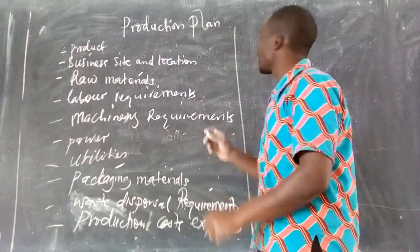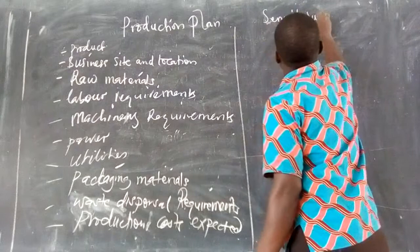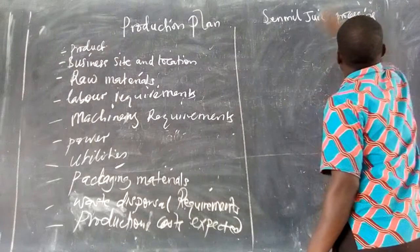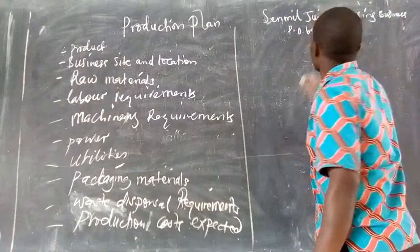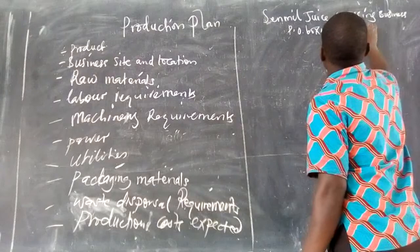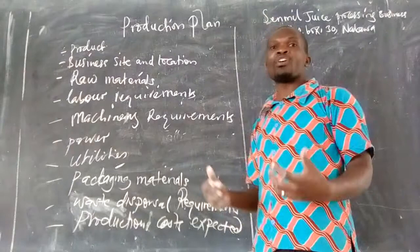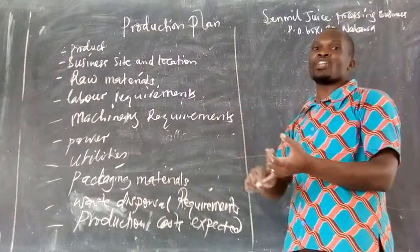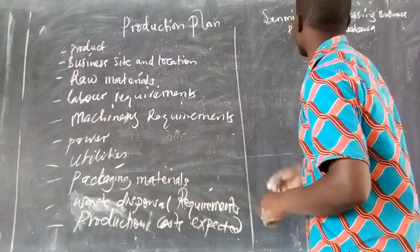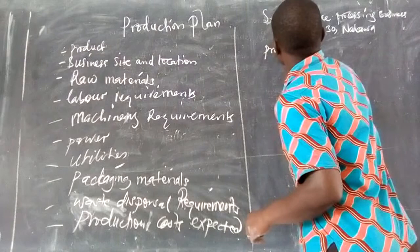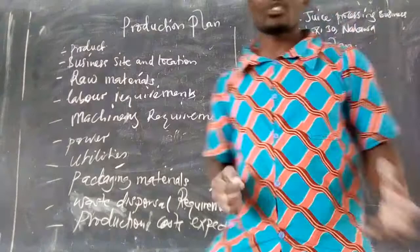For example, you might name it 'Guiz Processing Business,' with an address like P.O. Box 30, Nakawa. It is advised you not to write the location of your own school. When you describe the location, you should tell us the district and maybe the division. So it is better for you to tell us exactly places you know. Remember you are not supposed to write the name of your school. Then you write the document identity: Production Plan.